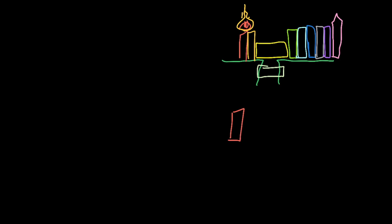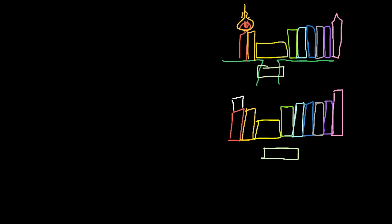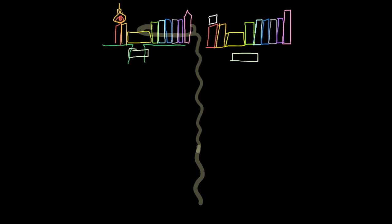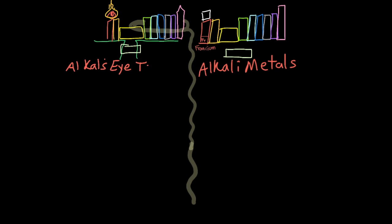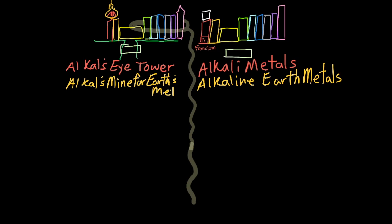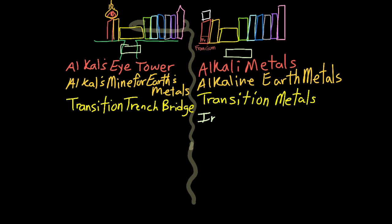Can you connect the towers and groups of the Periodic Fable with the columns and groups of the Periodic Table? Reading from left to right, we start with the Alkali Metals, then the Alkaline Earth Metals, then the Transition Metals, then the Inner Transition Metals.